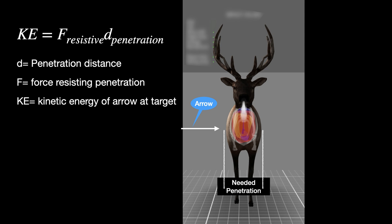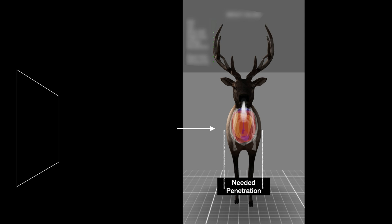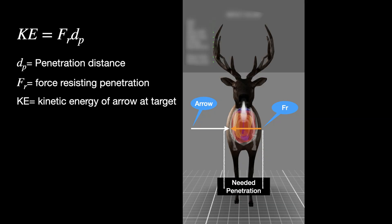Why do we care about energy downrange? Energy — and specifically work, which we've talked about in every video — is a force times a distance. When we talk about penetration into a target, a kill shot on an animal, we need the arrow to travel a certain distance through the animal. We know our kinetic energy at the animal, so the question becomes: what's the force? That force happens to be what the animal is putting on the arrow to resist it going through — things like hide, tissue, and bone — those are resistive forces.